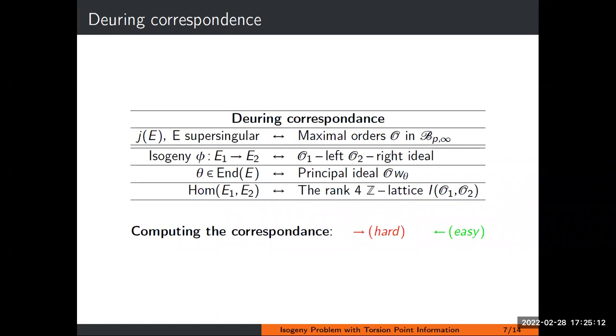An isogeny going from E1 to E2 corresponds to a left ideal of the first endomorphism ring, which is also simultaneously a right ideal of the second endomorphism ring. In particular, when theta is a separable endomorphism, this corresponds to a principal ideal of the endomorphism ring. The set of isogenies going from E1 to E2 has structure, and you can add isogenies between these curves. This is denoted by Hom(E1, E2), and this is a rank 4 Z lattice both in the isogeny and quaternion setting.